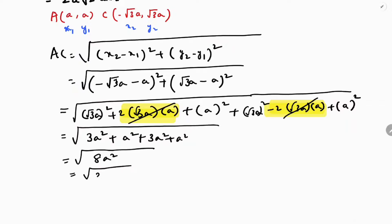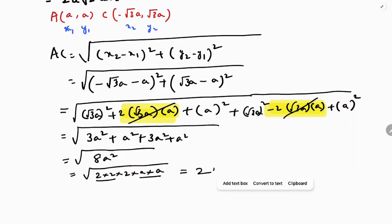So the total is 8a². Writing 8a² as 2 × 2 × 2 × a × a, we take 2 and a outside the square root, giving AC = 2a√2 units.